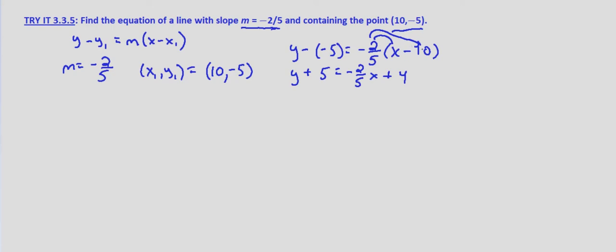This ends up being 4, two-fifths times 10, that's twenty-fifths, which is 4. So now we subtract 5 from both sides to isolate the y. So y equals negative two-fifths x minus 1, because 4 minus 5 is negative 1.